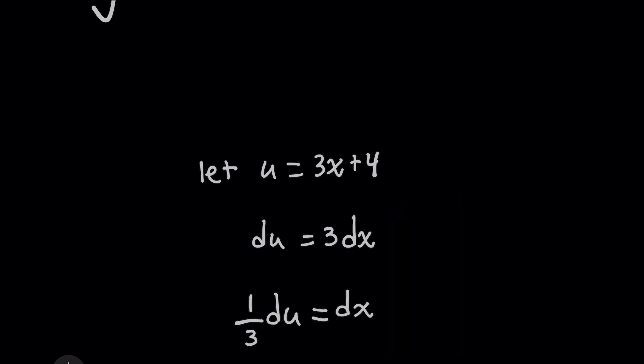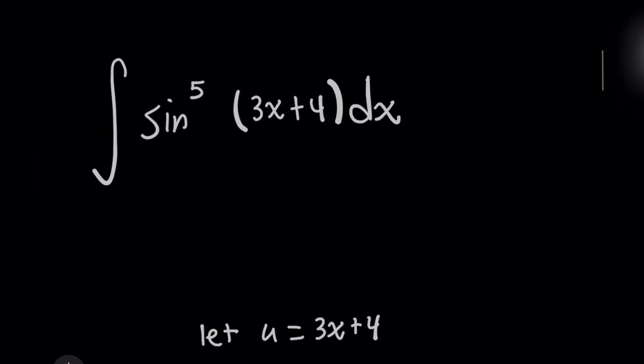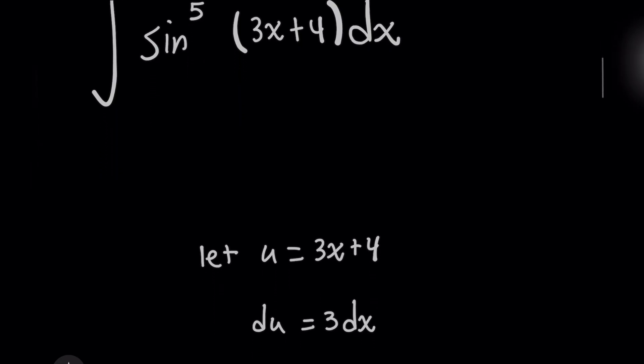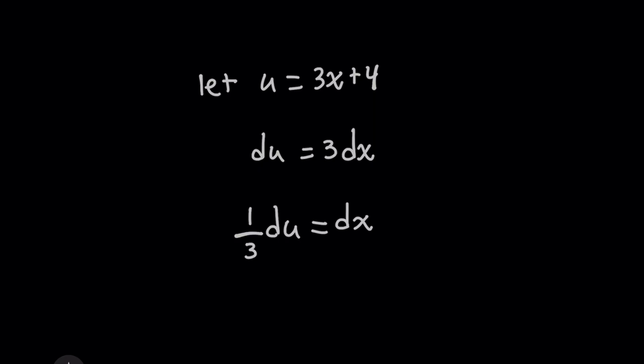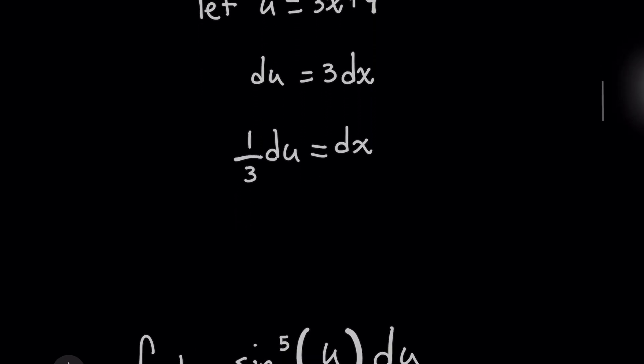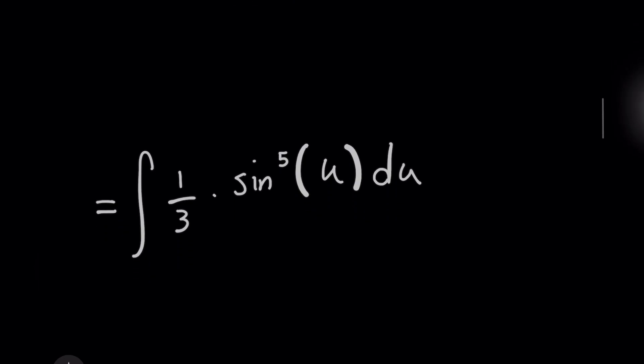So that means that the u-substitution here will actually work. But we don't have a 3 in the original problem in front of dx. So we need to actually solve this for dx by dividing both sides by 3. And so in the new integral that's in terms of u, dx is going to be replaced with this one-third du.